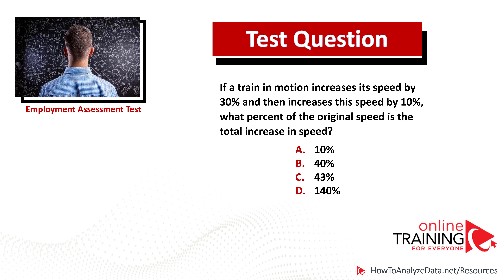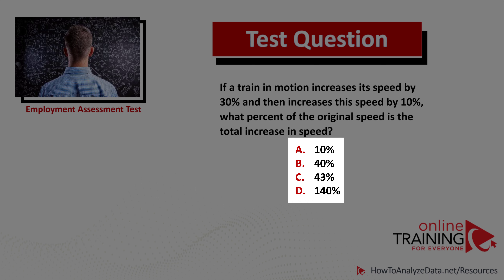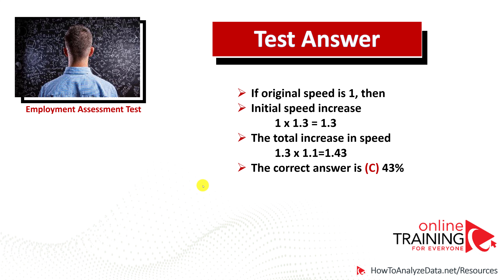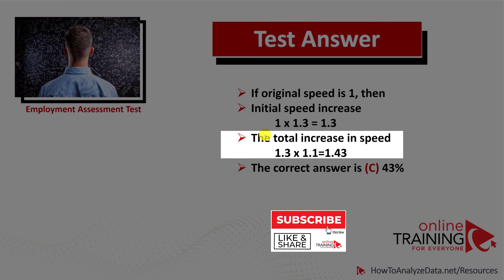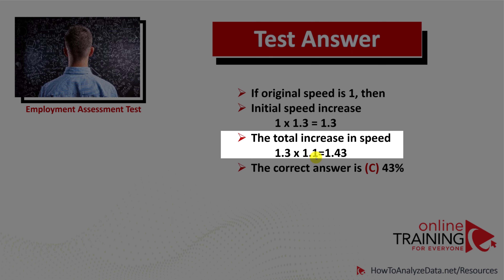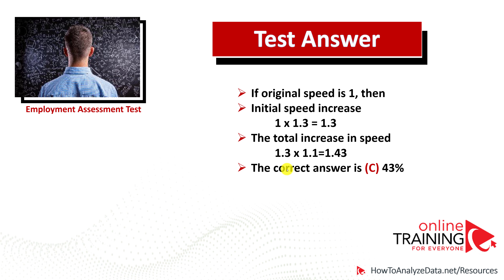Let's look at a tricky question which confused a lot of applicants. If a train in motion increases its speed by 30 percent and then increases the speed by 10 percent, what percent of the original speed is the total increase in speed? Choices: A, 10%; B, 40%; C, 43%; D, 140%. To solve this: if original speed is 1, the first increase is 1 multiplied by 1.3, which is 1.3. The total speed is then 1.3 multiplied by 1.1, which equals 1.43. So the correct answer is choice C, 43 percent.